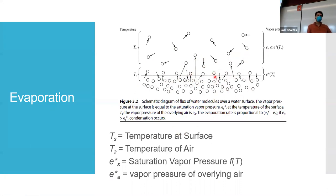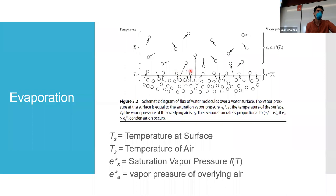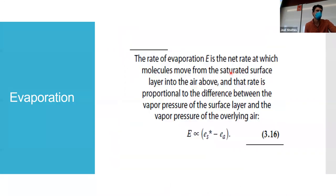You've got the temperature at the surface of the water, the air temperature, the saturation vapor pressure which is just a function of temperature, and then the actual vapor pressure that exists. The rate of evaporation is the net rate at which molecules move from the saturated surface layer — right above that water surface it's saturated, E equals ES saturation — up into the air above. That rate is proportional to the difference between the vapor pressure at the surface layer and the vapor pressure in the atmosphere.